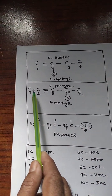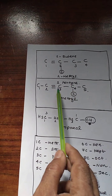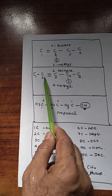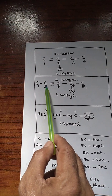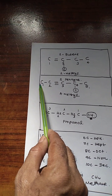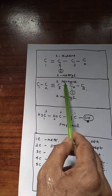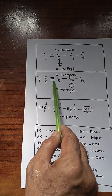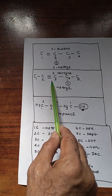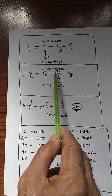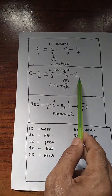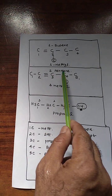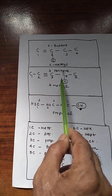Next one is pentyne. 2-pentyne means numbering is near the triple bond, and priority is given to this side: 1, 2 — not the other side 1, 2, 3, which gives 3. So from this side: 1, 2, 3, 4, 5 — 5 means pentane. Because it is a triple bond, the suffix is -yne, so pentyne. The name is 2-pentyne, 4-methyl.